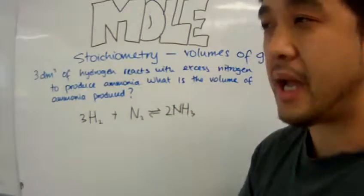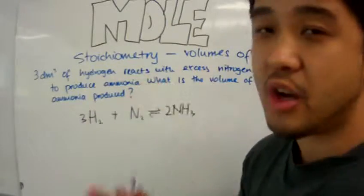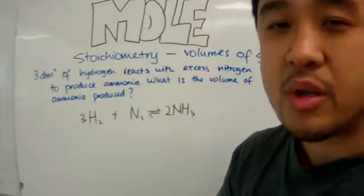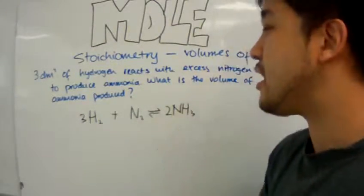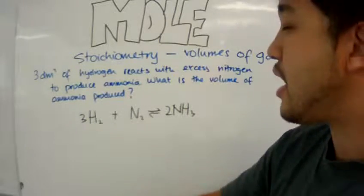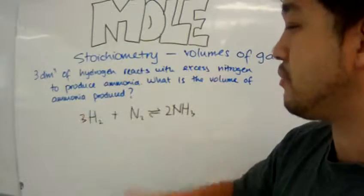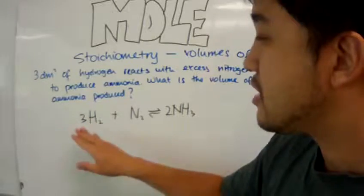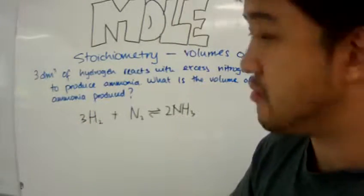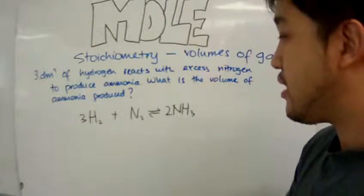To reconvert it back to the volume of ammonia produced, we just need to immediately assume that this means three moles, or three cubic decimeters of hydrogen. So, in essence, we can treat this here to be three cubic decimeters of hydrogen.